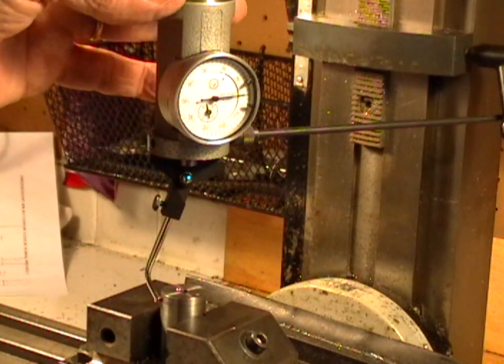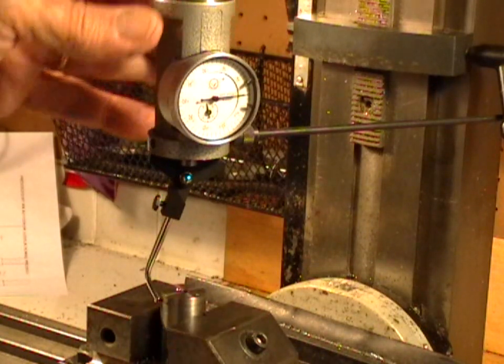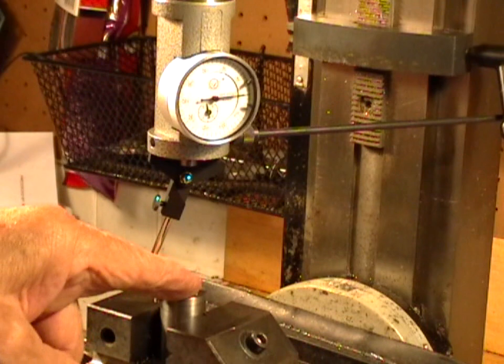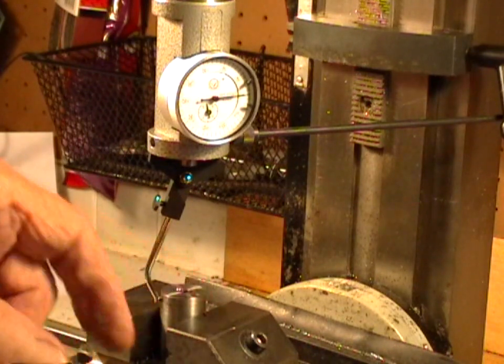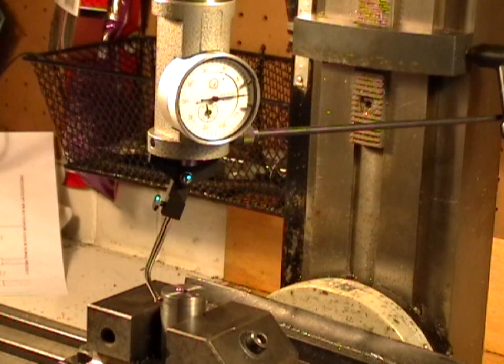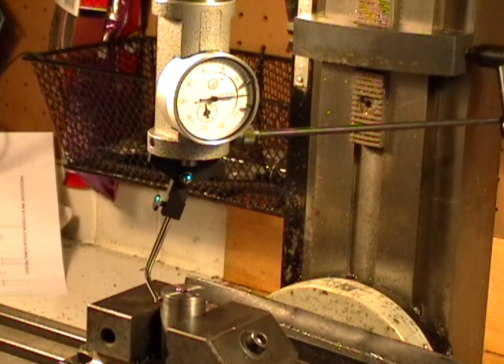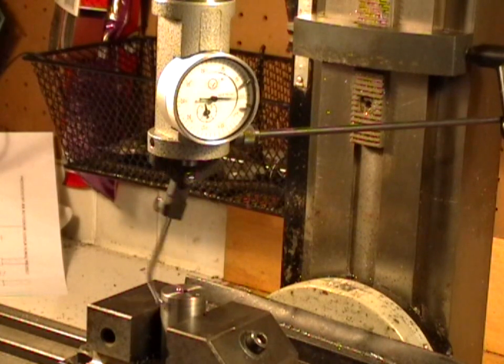You can just put a drill or whatever in the chuck and lower it down and get it approximately centered, because if it's too far off the needle swings far too much. But it's approximately centered now and I'll start rotation.